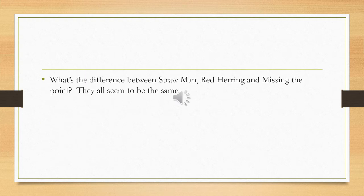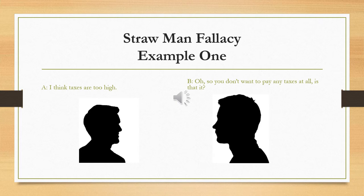I'm going to give some examples of straw man fallacy, red herring, and missing the point, and hopefully these will illustrate the distinction between these three fallacies. One thing they tend to share is that they are two-person fallacies where one person is committing the fallacy against another person. Straw man fallacy involves creating a distorted version of an argument and then attacking that distorted version. Since the distorted version is usually ridiculous and preposterous, it falls over real easy — just as a straw man would fall over with just a tiny little push.